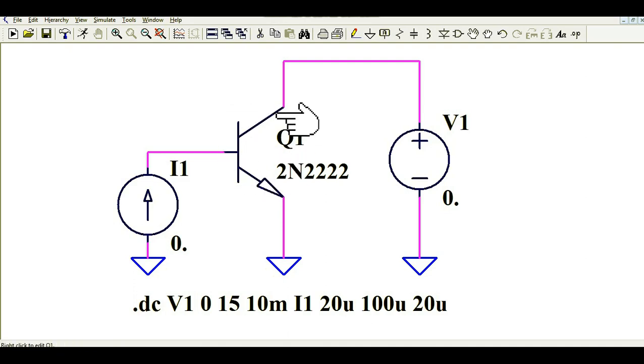You can see here this is a very simple circuit. It has one transistor Q1 and you can see the base of this Q1 is injected by the current I1. This is current I1. It has got multiple values starting from 20 microampere to 100 microampere in the step of 20 microampere.